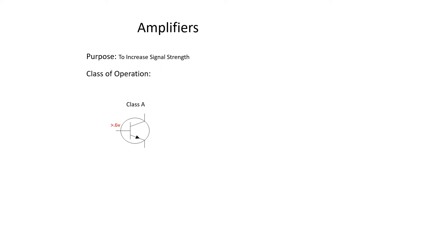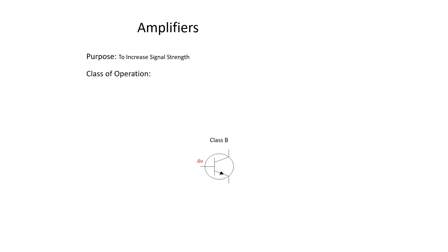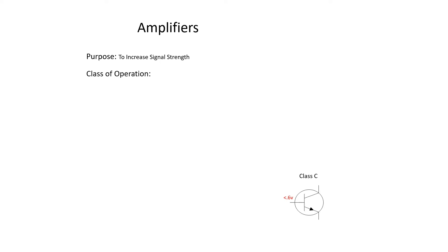In class A operation, the transistor has greater than 0.6 volts on the base. That means if we bring in a full sine wave, we're going to get a full sine wave out — it has the highest fidelity. In class B operation, you'll have exactly 0.6 volts on the base, so a full AC sine wave in gives only half a sine wave on the output. In class C operation, you'll have less than 0.6 volts on the base, and you get less than half of a sine wave on the output.